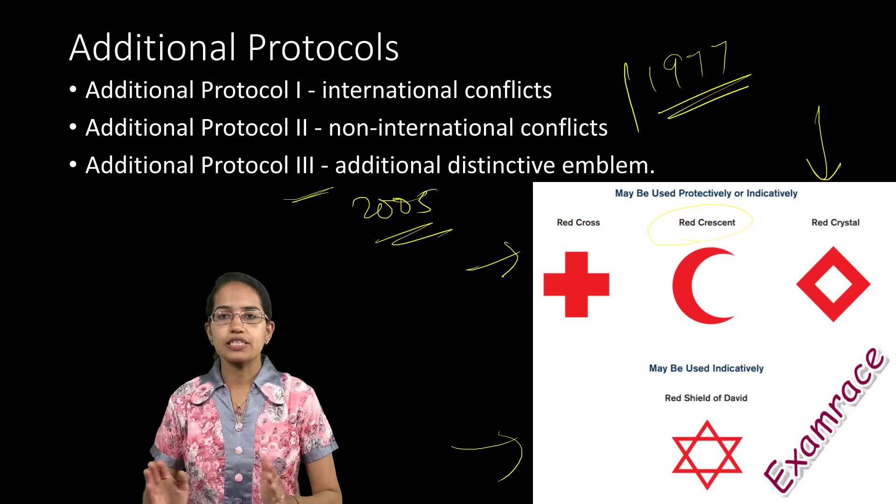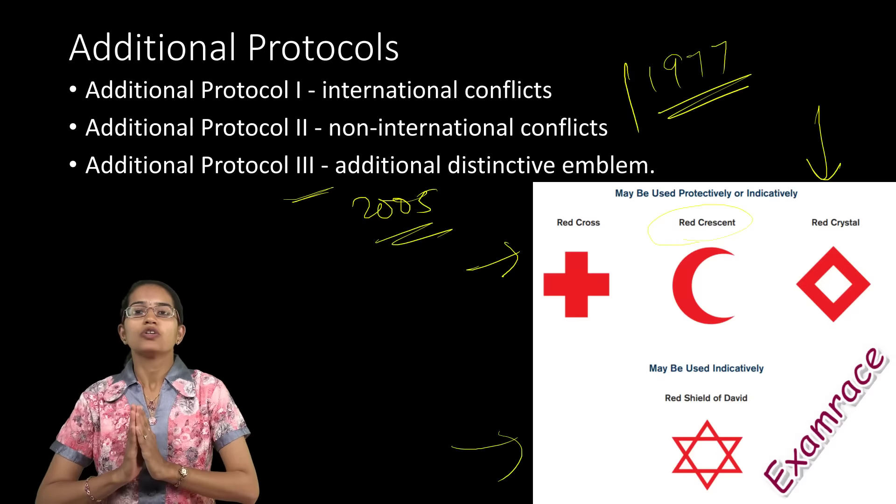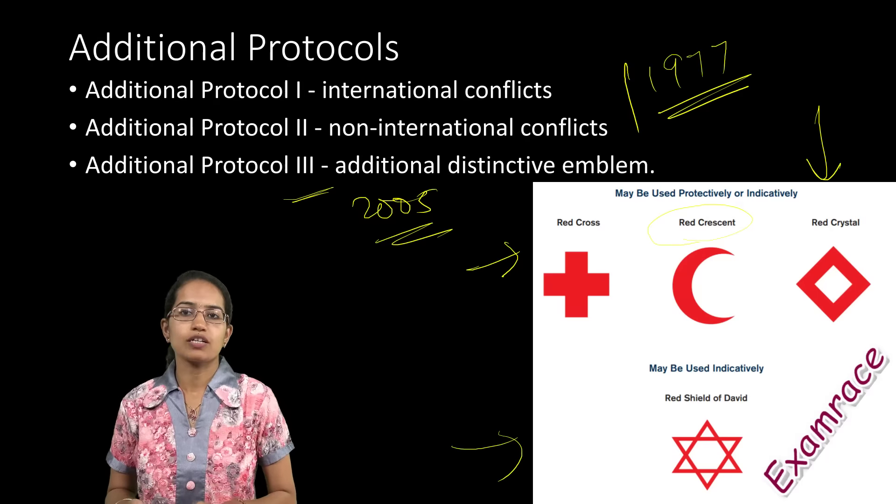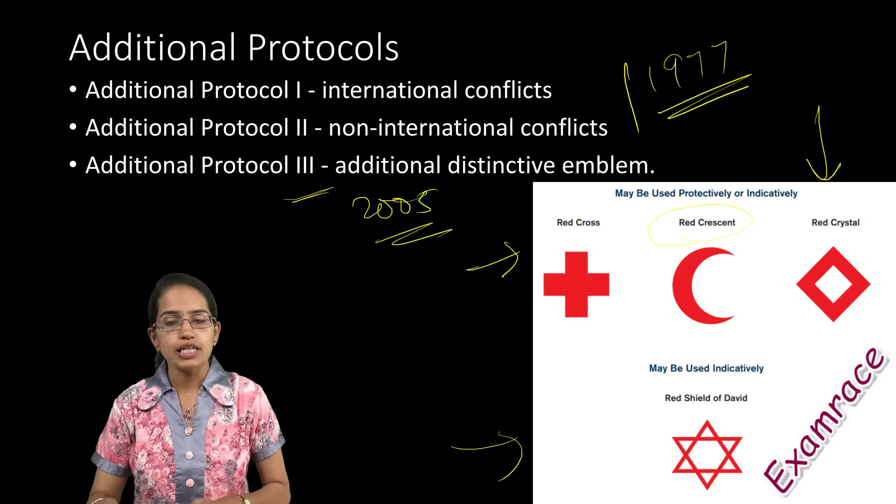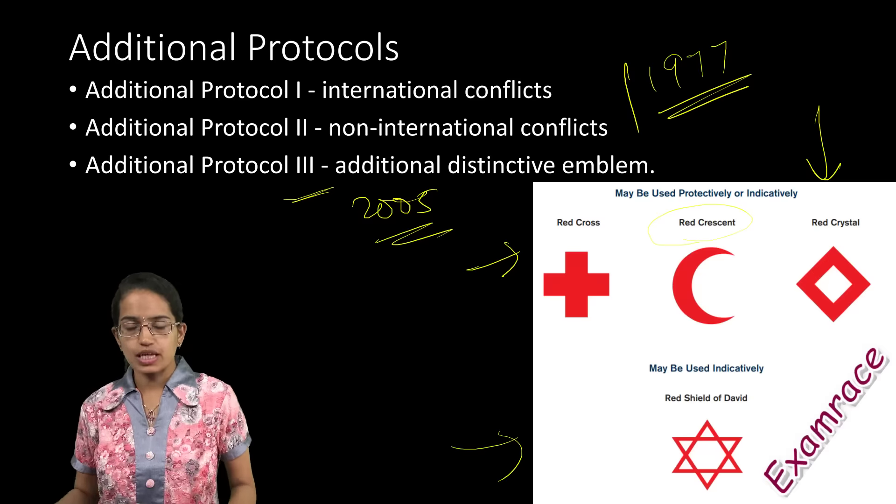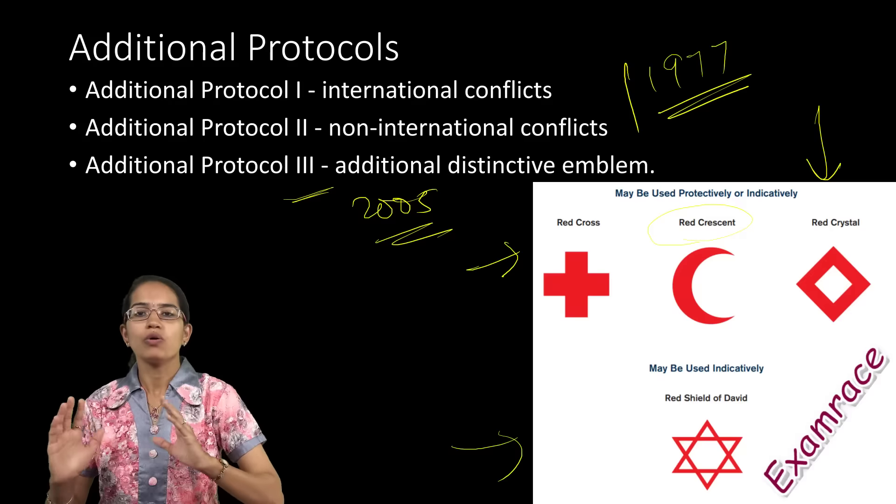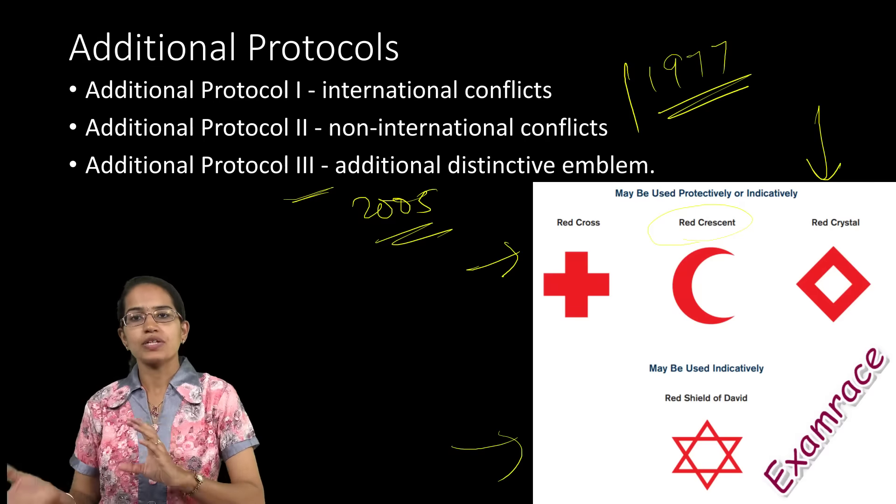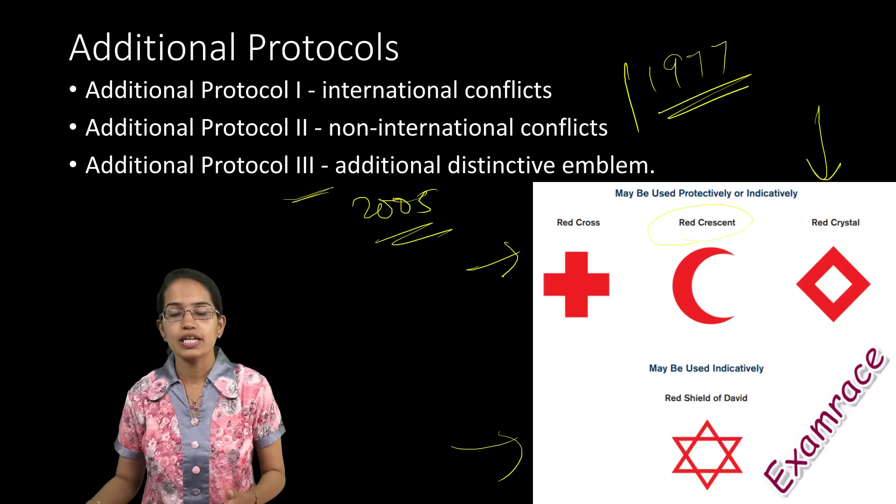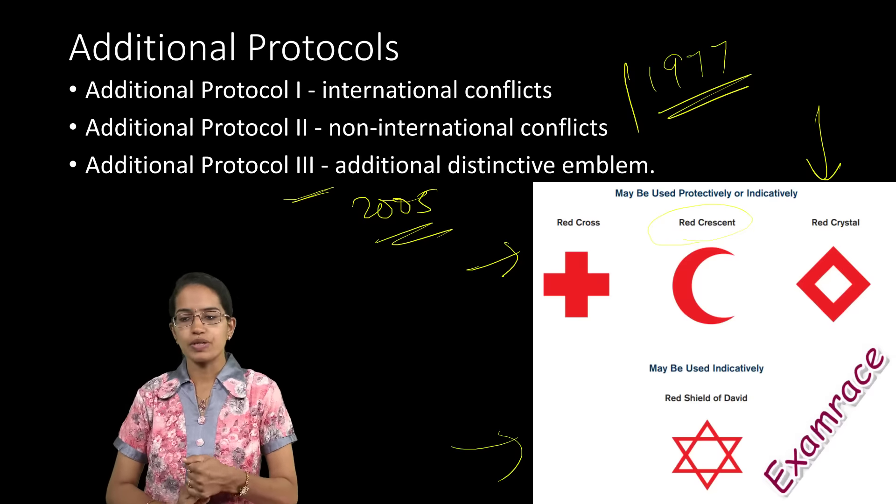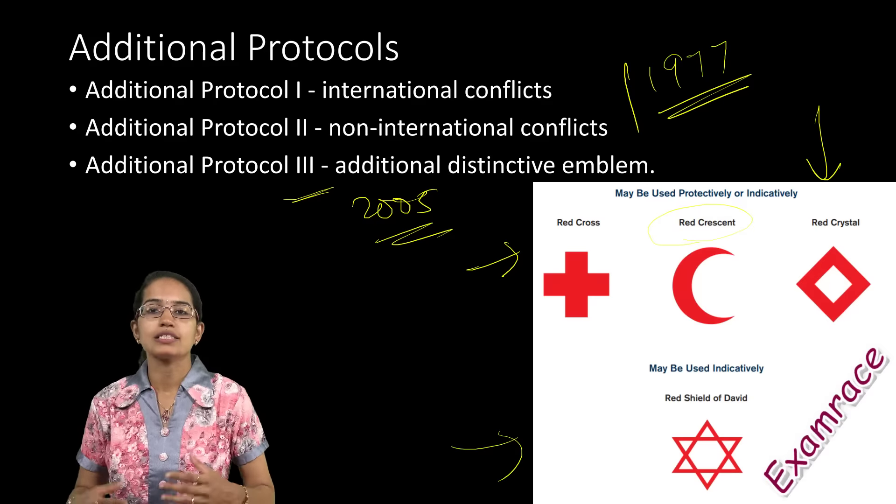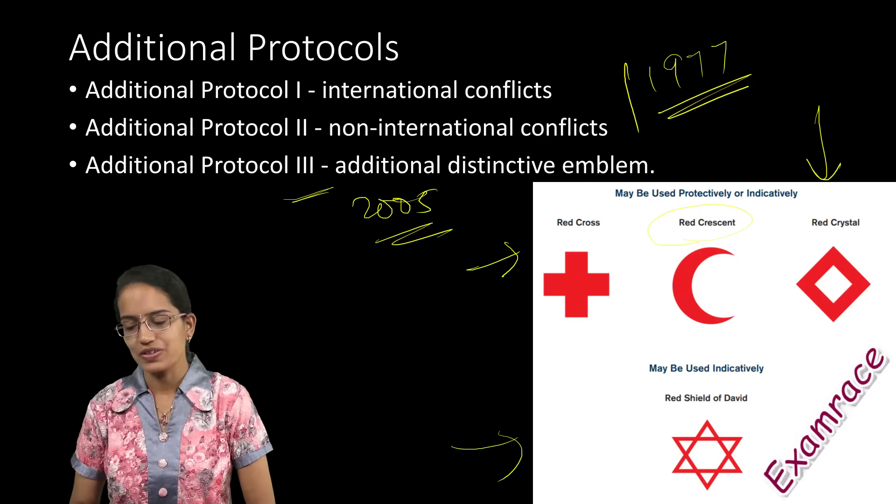For your examination, important topics include the major conventions, the main idea in each convention, the three protocols, the three symbols, differences between symbols, and why they came up. The difference between protocol, treaty, and convention is important not only for this but for various environmental programs. We'll be coming up with many recent contemporary topics. Stay tuned and have a wonderful day ahead.